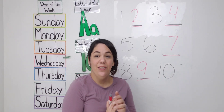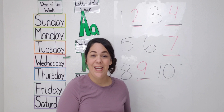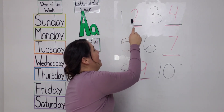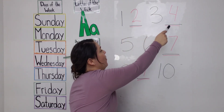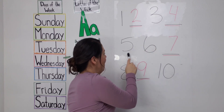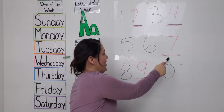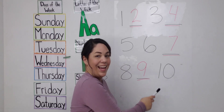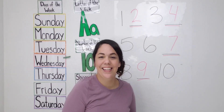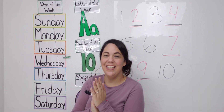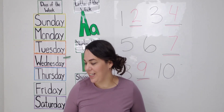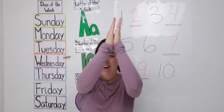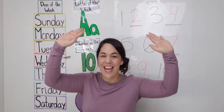Let's count that together one more time. Ready? One, two, three, four, five, six, seven, eight, nine, and ten. Good job friends. Good counting. Let's give ourselves a round of applause. Yay!